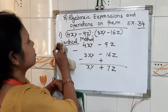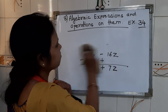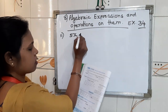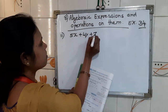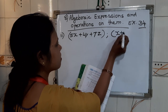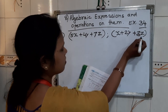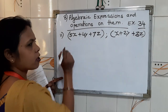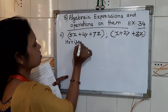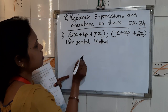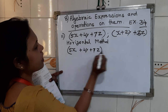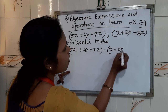So we will move further — question number second. A trinomial is given: 5x plus 4y plus 7z, and the next term is x plus 2y plus 3z. So first method: horizontal method. I hope when you will solve, you will also solve by both methods.